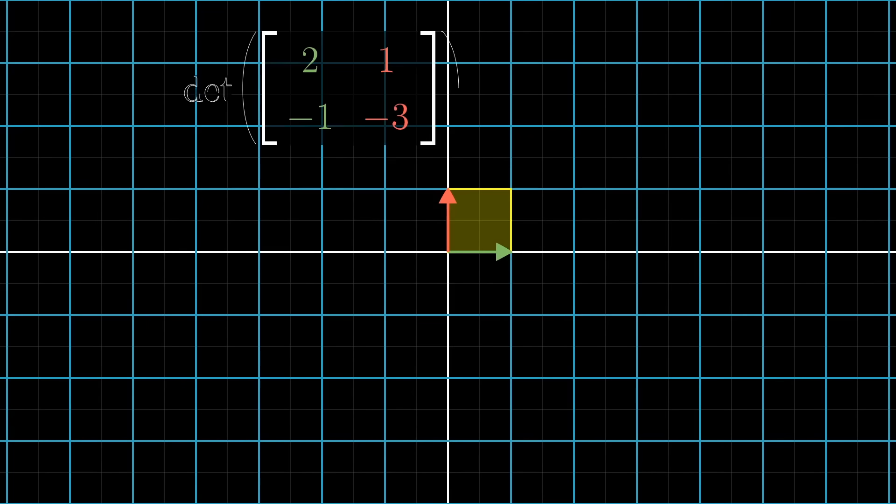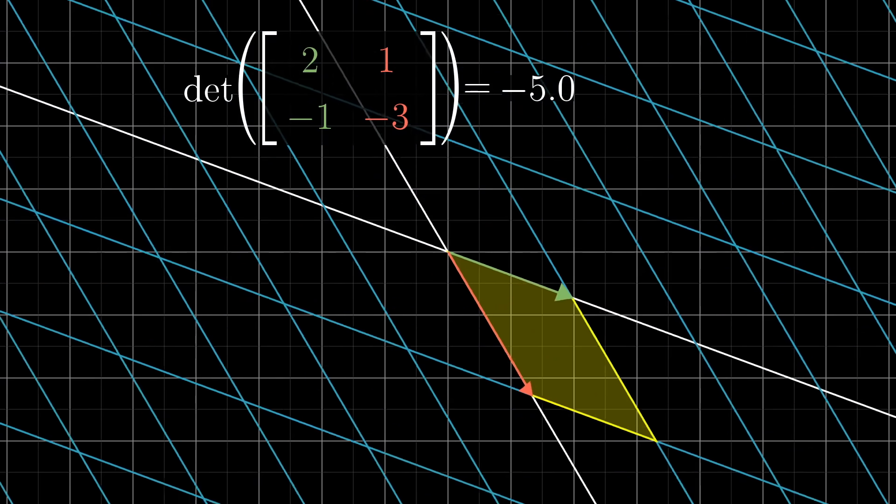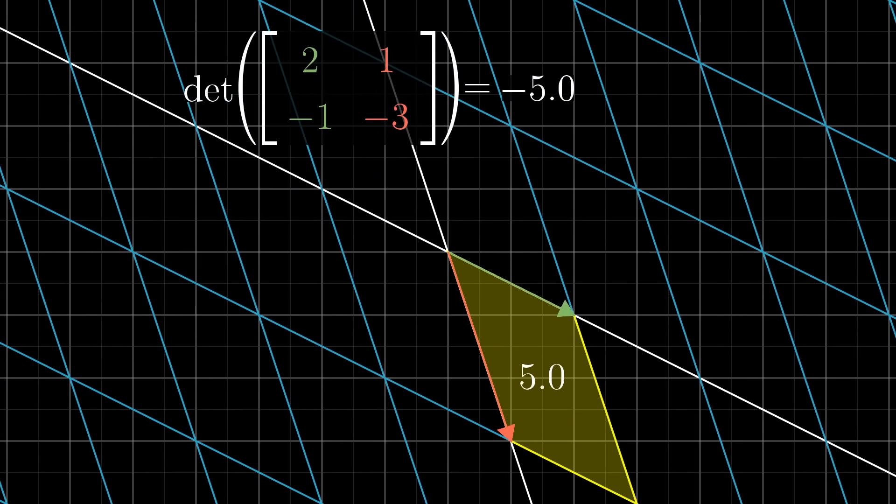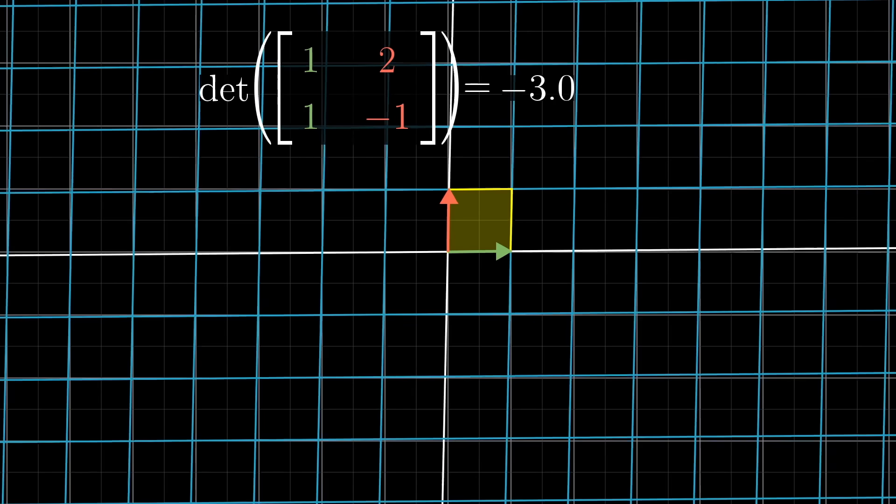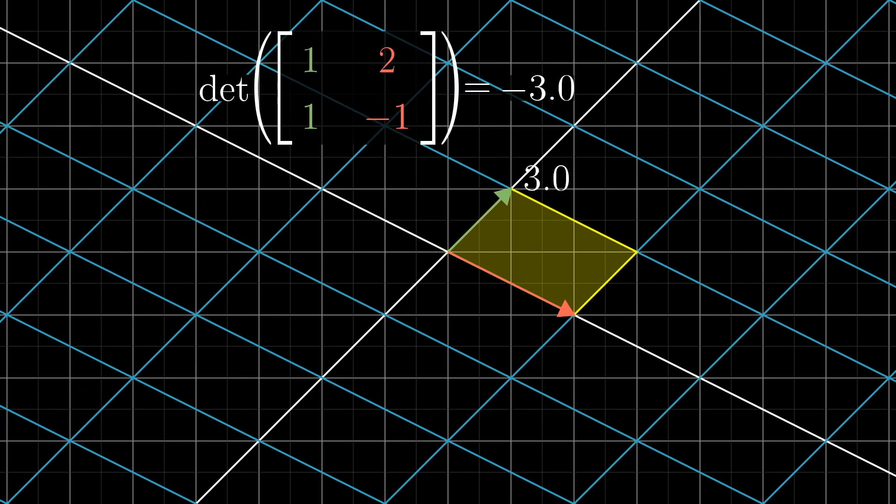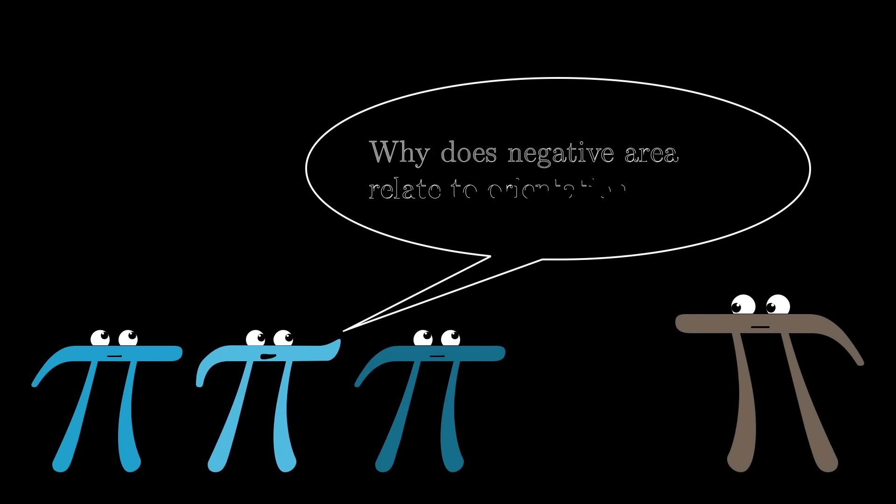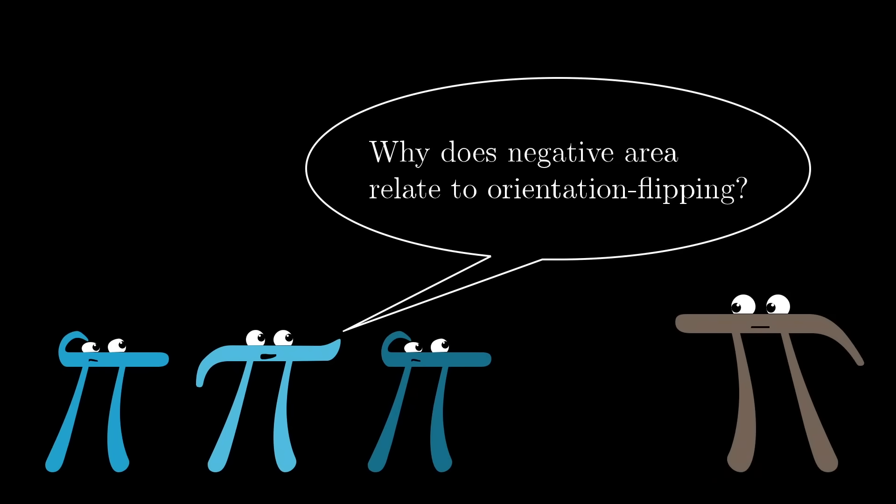Whenever this happens, whenever the orientation of space is inverted, the determinant will be negative. The absolute value of the determinant, though, still tells you the factor by which areas have been scaled. For example, the matrix with columns 1, -1 and 2, 1 encodes a transformation that has determinant, I'll just tell you, negative 3. And what this means is that space gets flipped over and areas are scaled by a factor of 3.